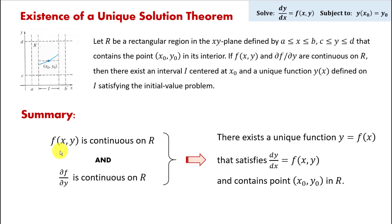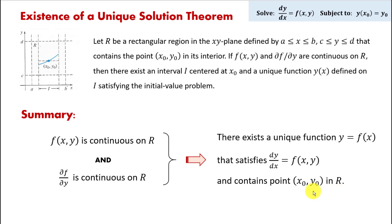So if that function — the right-hand side of the first-order differential equation — is continuous on R, that was the first condition. The second condition is that the partial derivative of function f with respect to y is also continuous on R. If those two conditions are satisfied, then there exists a unique function y equals f of x that satisfies our differential equation, and that function contains point x sub 0, y sub 0 in R, meaning it's the solution to the initial value problem. In short, when those two conditions are satisfied, the solution exists and it's unique.